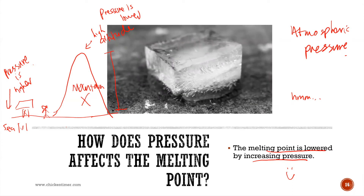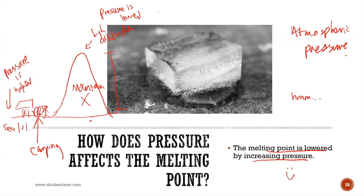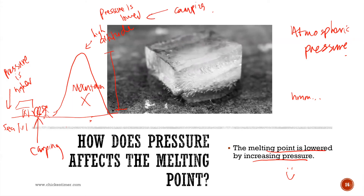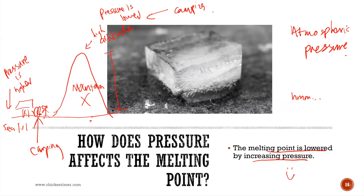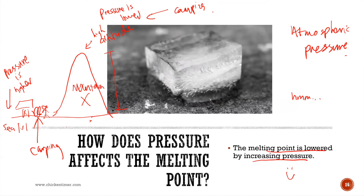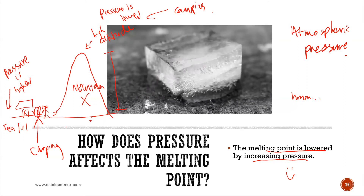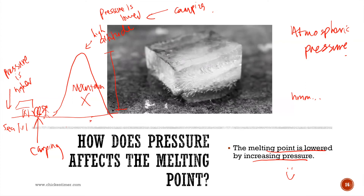At high altitude, pressure is low; at sea level, atmospheric pressure is higher. If you have high pressure, the melting point is lowered. So at sea level when camping, a block of ice will melt faster. The same block of ice brought up to the mountain top will melt later, at a higher temperature. Pressure also affects boiling.